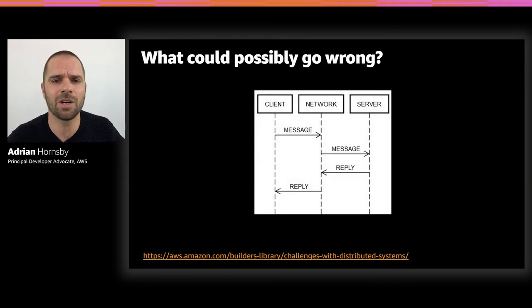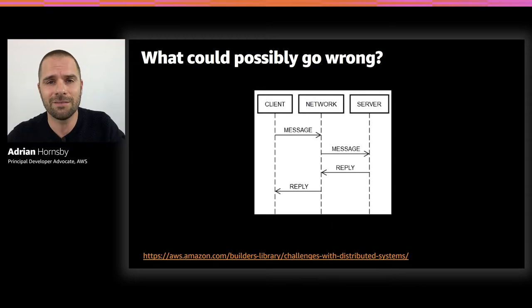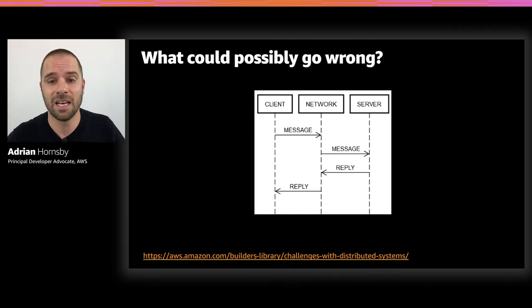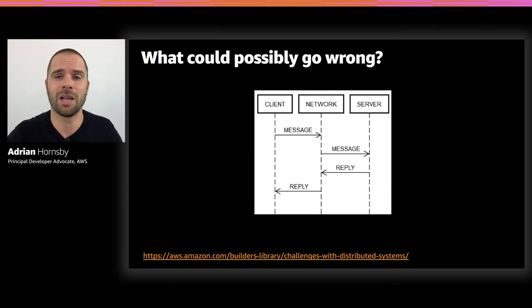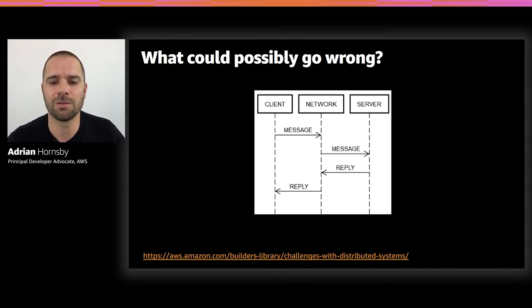I would even argue that simple applications are complex. Take, for example, a simple client-server communication. There are a lot of steps for a single round trip: the client puts a message into the network, the network delivers the message to the server, the server validates the message, the server might update its state, then puts a reply onto the network, the network delivers the reply to the client, and the client validates the reply and maybe updates its own state. It's mind-boggling to consider all the different permutations of failure that this simple distributed system can encounter, especially over multiple requests.